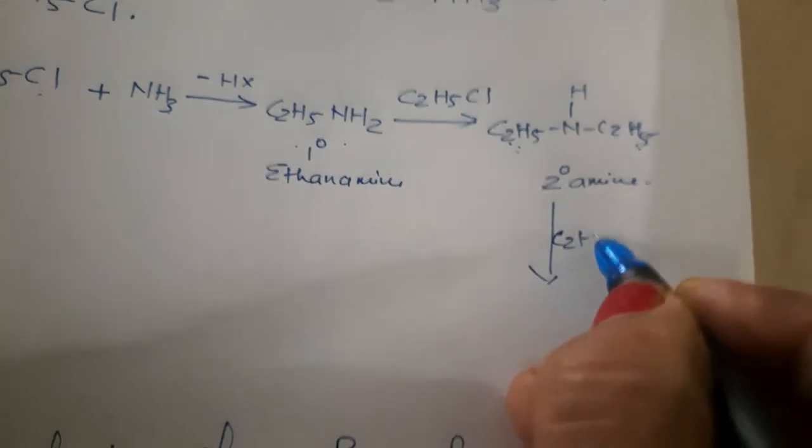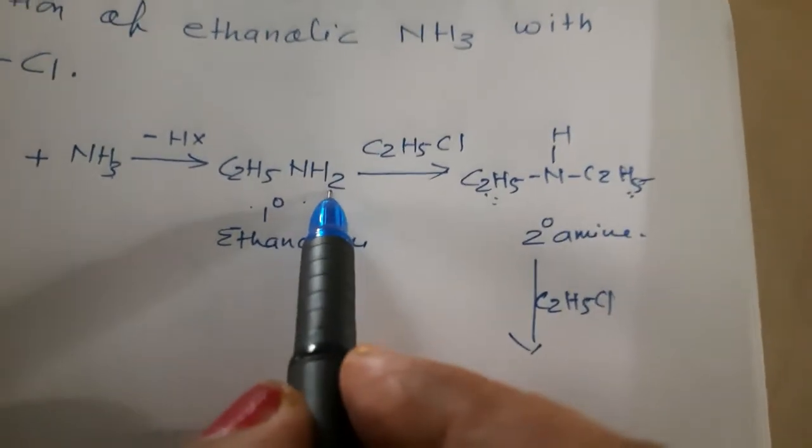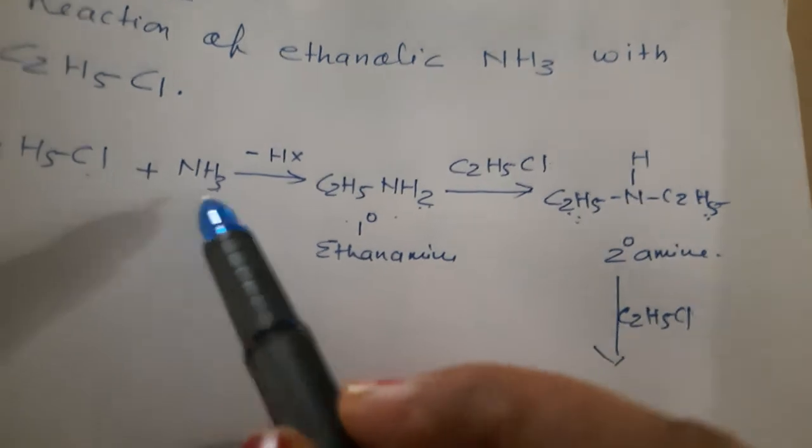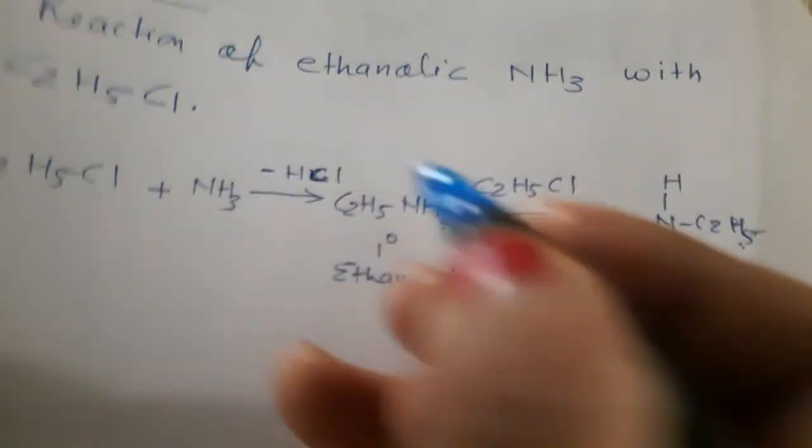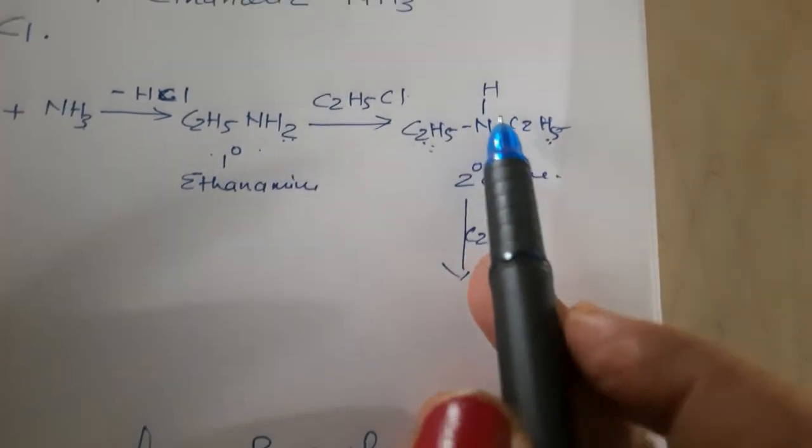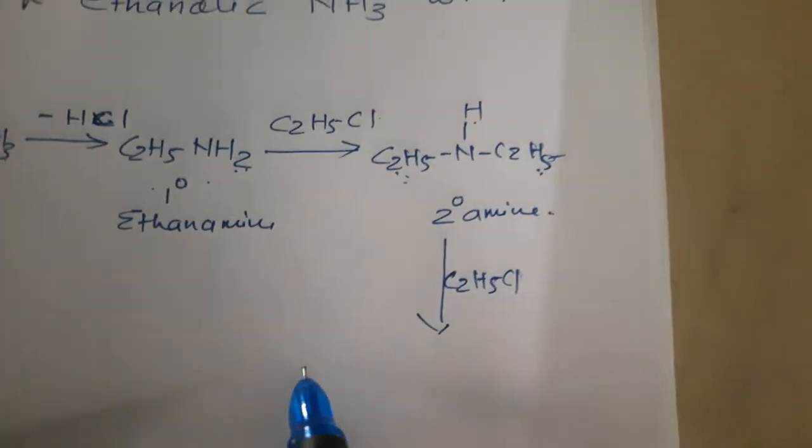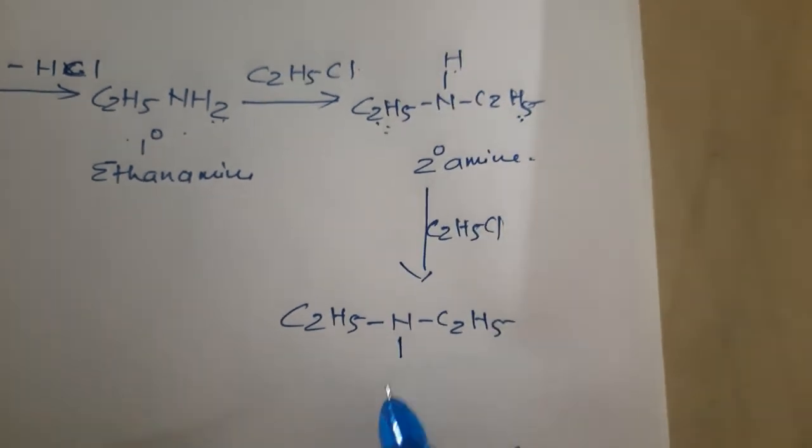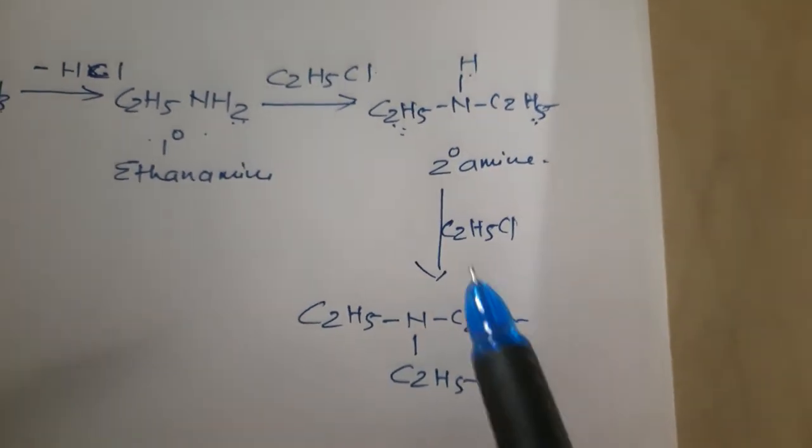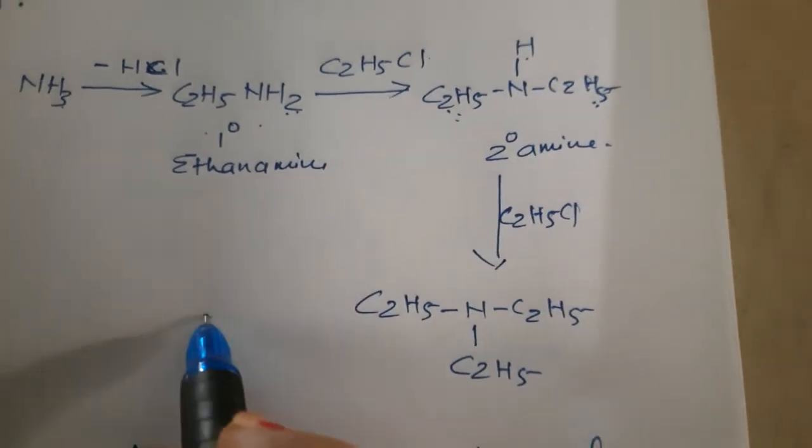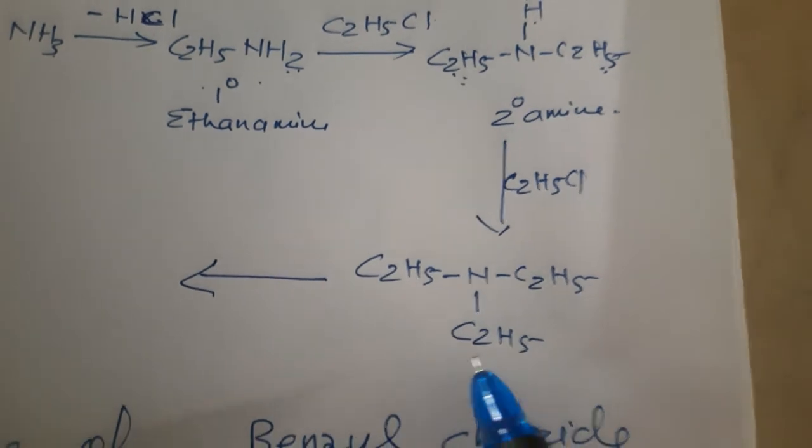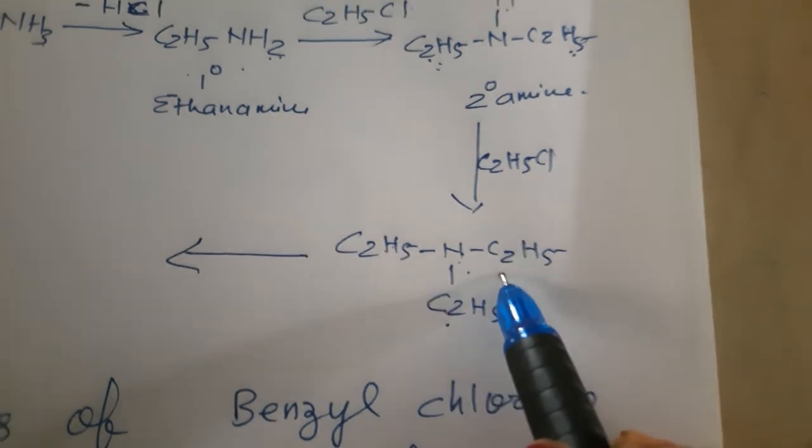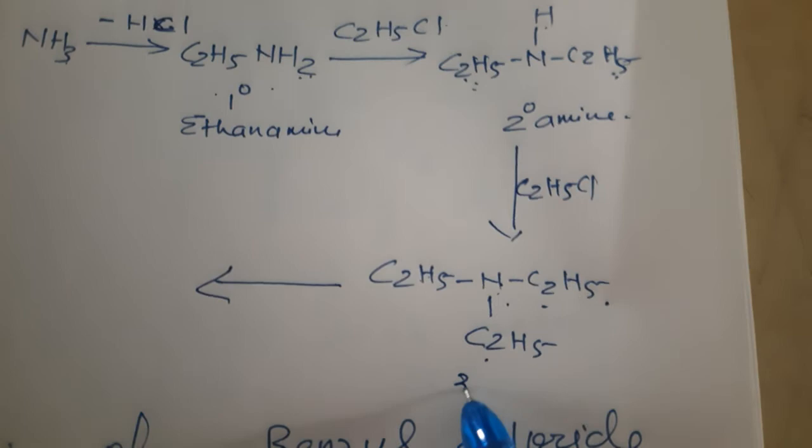After this again, it will be treated with C2H5Cl. This hydrogen is combining with this Cl and HCl will be liberated out. Now, again it will be treated. So, third hydrogen will also be removed. So, now it will form C2H5-N-C2H5-C2H5. H and Cl will form HCl and it will be out. This is 3 degree amine. This is two ethyl groups attached and ethyl amine.